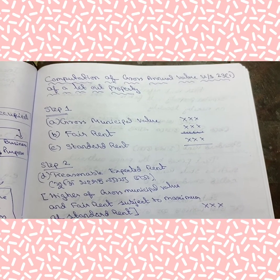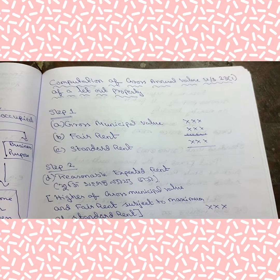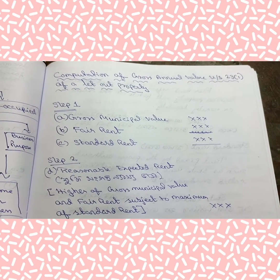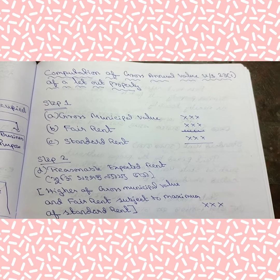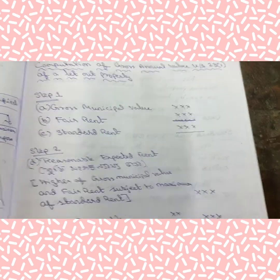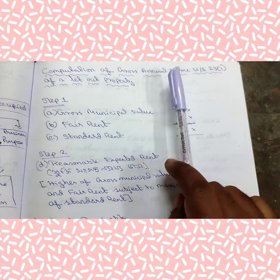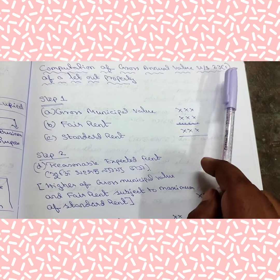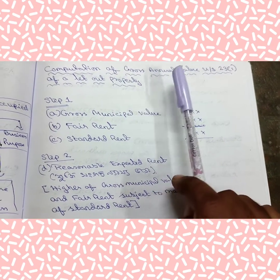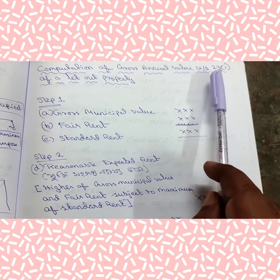Now, the point is how to calculate gross annual value under Section 23 subsection 1. The section for annual value is 23. This is subsection 1 because this is a let-out property. For let-out property, the section for annual value is Section 23 subsection 1. You have to remember this.